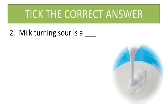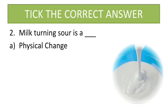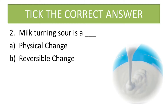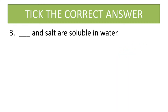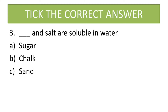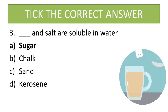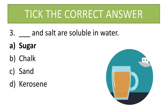Second question: milk turning sour is a — options are physical change, reversible change, chemical change, or none of these. Milk turning sour is a chemical change. Third question: dash and salt are soluble in water. Options are sugar, chalk, sand, or kerosene. Sugar is soluble in water, so sugar and salt are soluble in water — option A is correct.